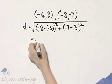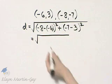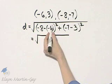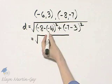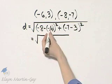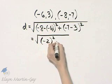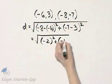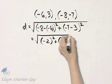And now let's simplify. That's the square root of, this is negative 8 plus 6, and negative 8 plus 6 is negative 2, negative 2 squared, plus, that's negative 10 squared.